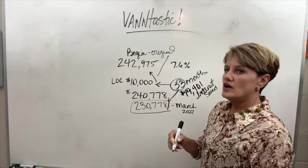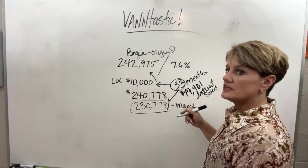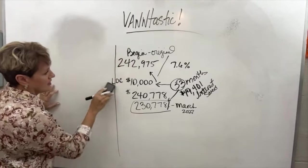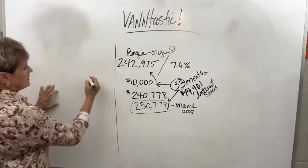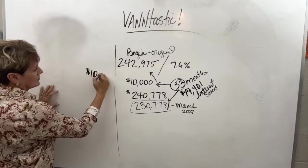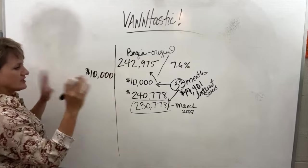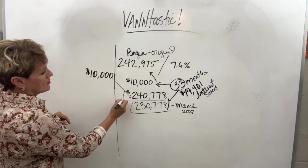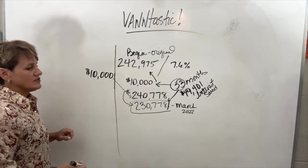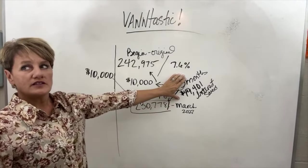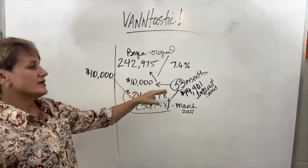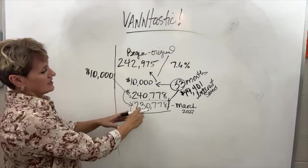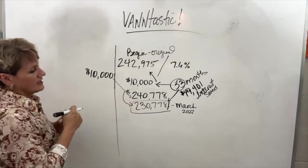Now, what if he just decided, no, I'm just going to go ahead and put $10,000 in it because I'm in it to win it. We're going to say that he is going to get a $10,000 LOC or HELOC, doesn't matter. And today, right now, he's going to say, okay, I'm putting this on this balance. And now my balance is $230,778. This is done.